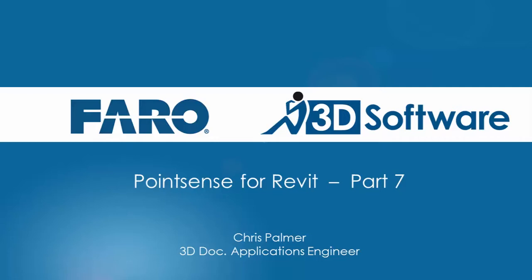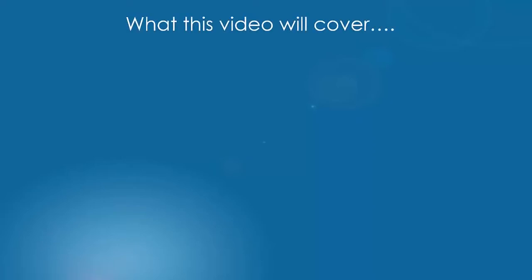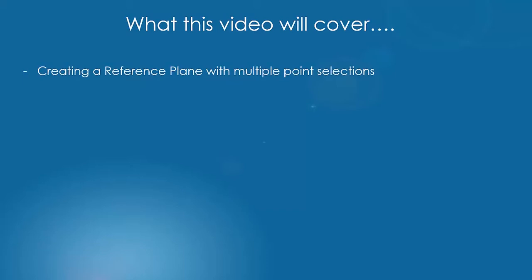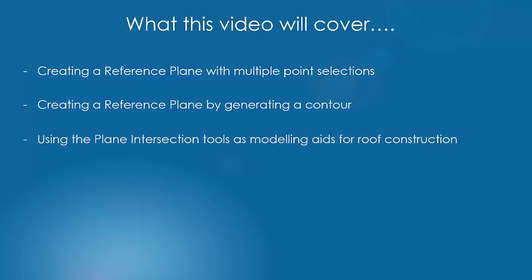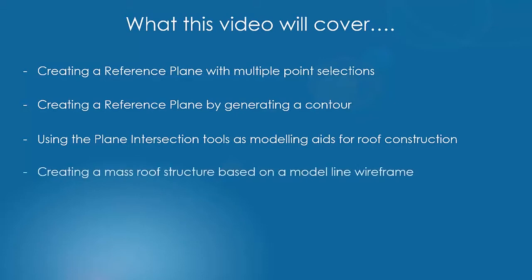Hi and welcome to part 7 of the PointSense Revit tutorial series. In this tutorial we will be specifically looking at creating a reference plane using multiple point selections, creating a reference plane by generating contours, using the plane intersection tools as modelling aids for roof construction, and creating a mass roof structure based on a model line wireframe.